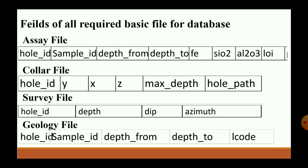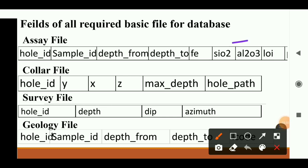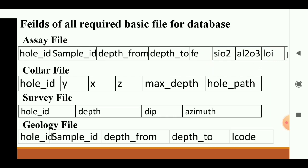We require 4 files: collar file, survey file, assay file and geology file. For the assay file, the fields are: hole ID, sample ID, depth from, depth to, and then the analyte columns — Fe, SiO2, Al2O3, and LOI. These analytes can change as per the mineral being studied. Sample ID is also not a mandatory field in the assay file.